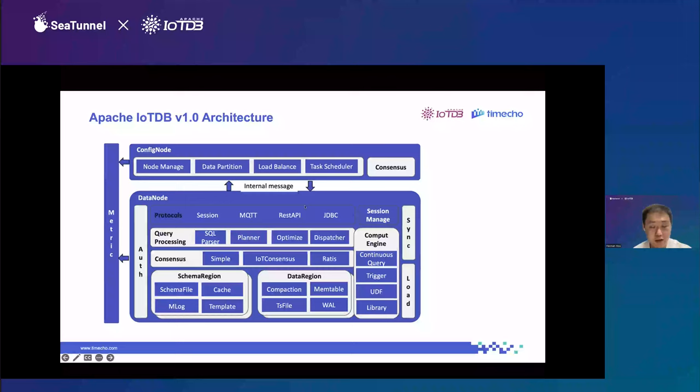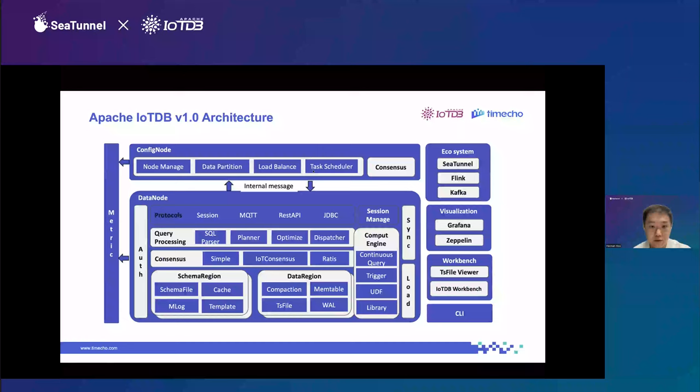We have a data region to manage data during file compaction, managing memory data called MemTable and disk data called TSFile and WAL. We also have a consensus layer for the Data Node supporting several consensus protocols. For the ecosystem, we support integration with SeaTunnel, Kafka, and we also have visualization tools like Grafana and Zeppelin. We also developed our own workbench tools such as TSFile Viewer and IoTDB Workbench.